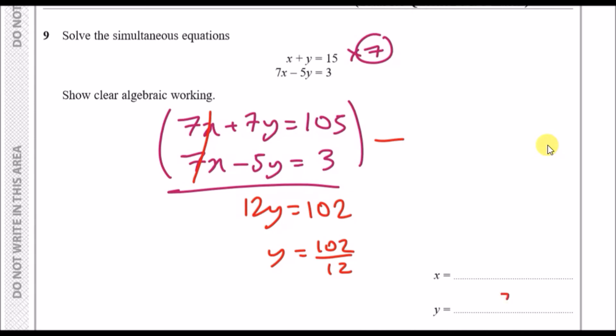To find x, pick any of the four equations that looks easiest. I'm going to pick this one because it looks so simple. x plus y is 15, that means x equals 15 minus y, or minus 8.5. So 15 minus 8.5 should give us 6.5.